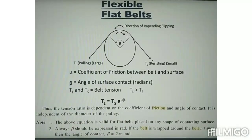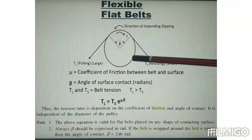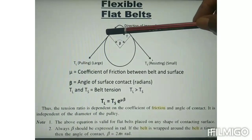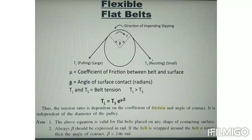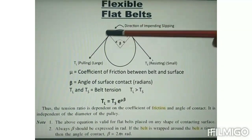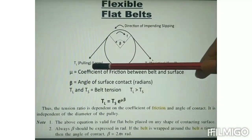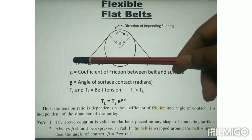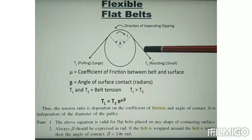Now let us consider a flexible flat belt passing over a fixed pulley with a total angle of contact between the belt and pulley of β radians. Since the direction of impending motion is in this direction, this side of the belt will be subjected to a larger pulling tension, termed TL. The other side will be subjected to a smaller resisting force, termed TS.